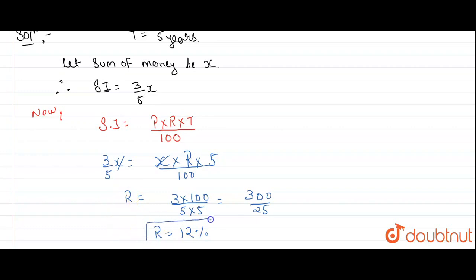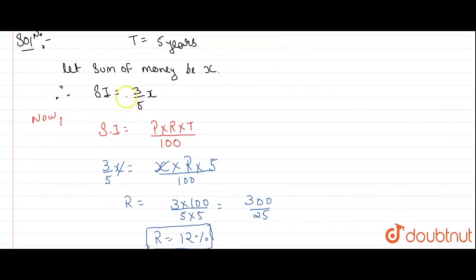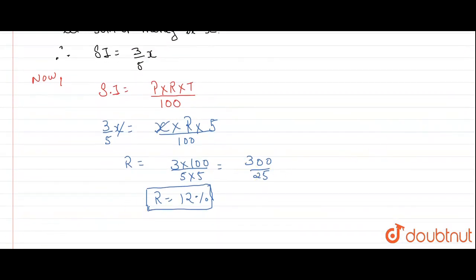This will be our rate per annum — 12 percent per annum. To summarize: T = 5 years is given, sum of money be X means principal be X, and SI will be 3/5 X. We have the formula SI = PRT/100. We put in the values and calculated R, which is the rate per annum. I hope this answered your question. Thank you.